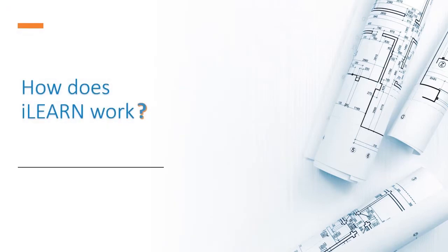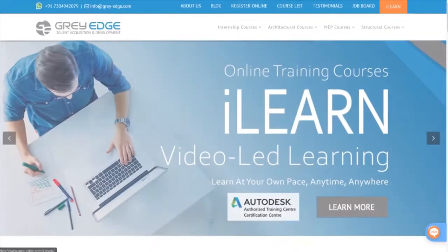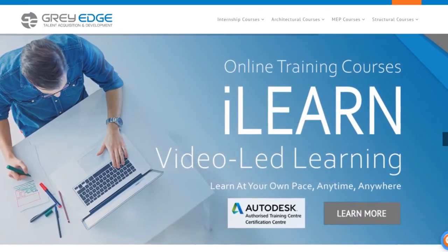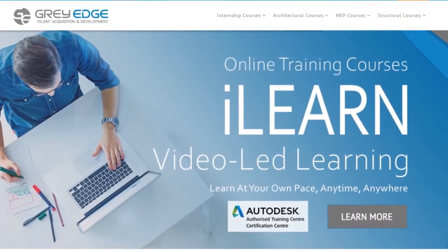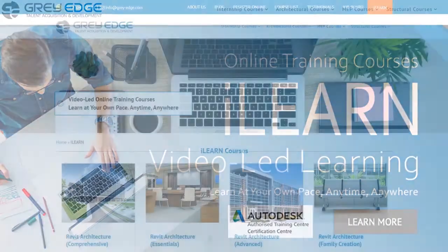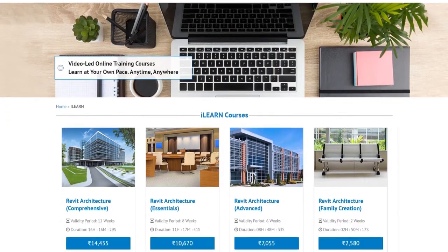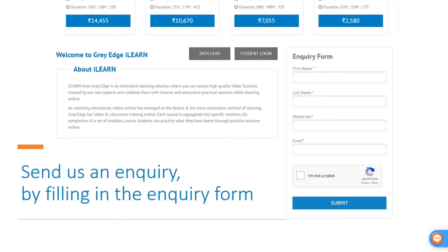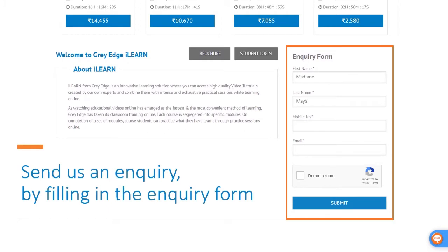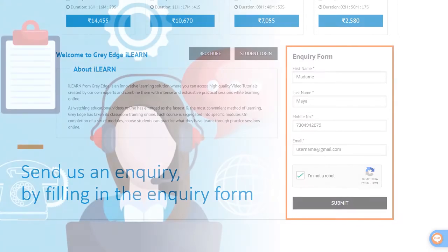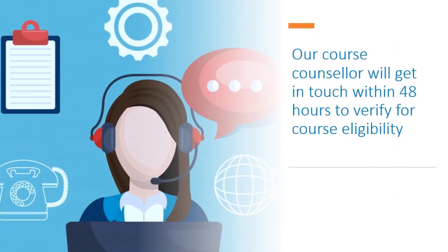How does ILEARN work? Visit greyedge.com and click on ILEARN. Send us an enquiry by filling in the enquiry form. Our course counsellor will get in touch to verify your course eligibility.